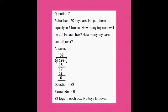2 × 6 = 12. Subtracting gives 0. So quotient is 32, remainder is 0. Therefore 32 toys in each box and there are no leftover toys. Did you all understand?